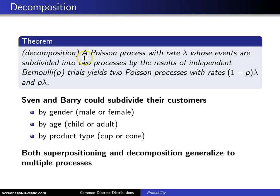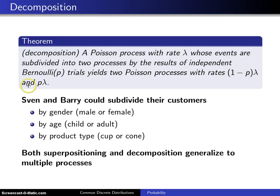Here is the theorem, again stated but not proven. A Poisson process with rate lambda whose events are subdivided into two processes by the results of independent Bernoulli P trials yields two Poisson processes with rates 1 minus P times lambda and P times lambda.